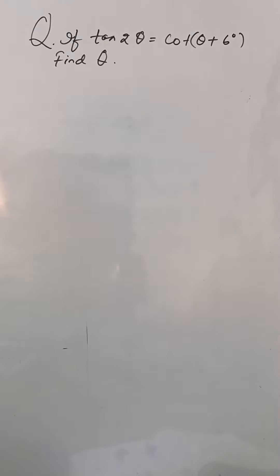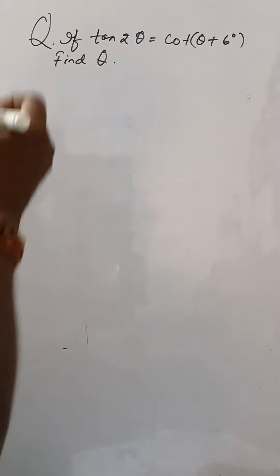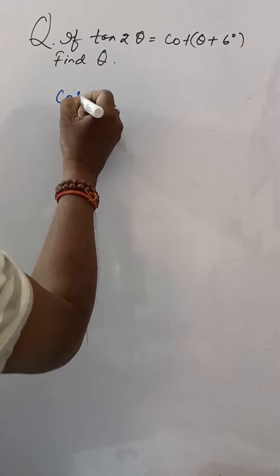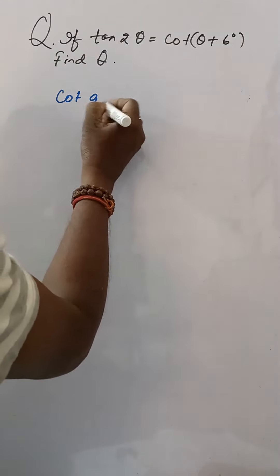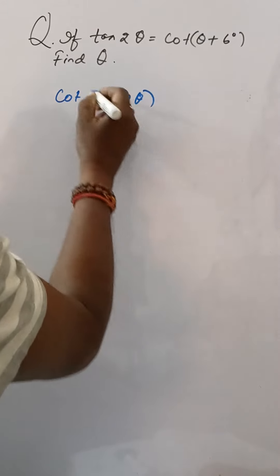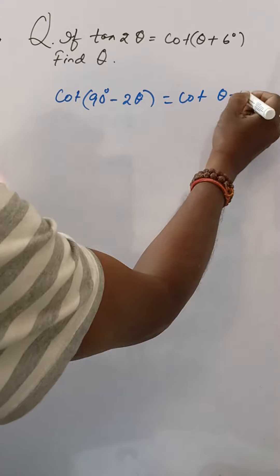If tan(2θ) = cot(θ + 6°), find θ. Here, tan(2θ) can be written using the complementary angle rule as cot(90° - 2θ), so cot(90° - 2θ) = cot(θ + 6°).